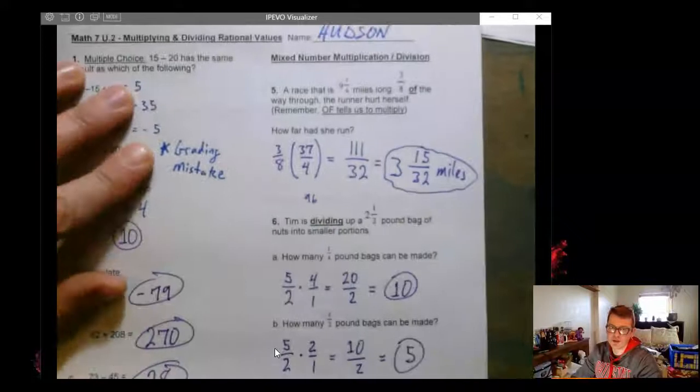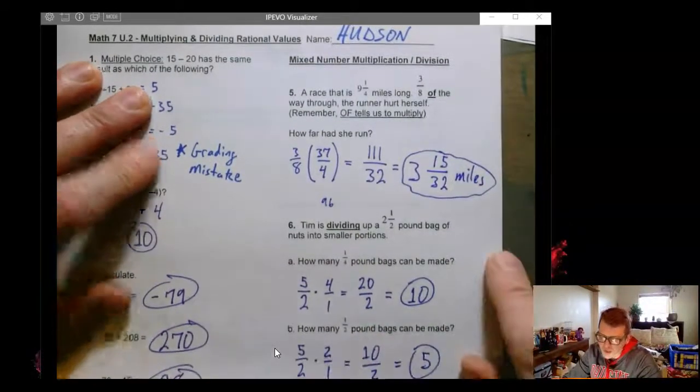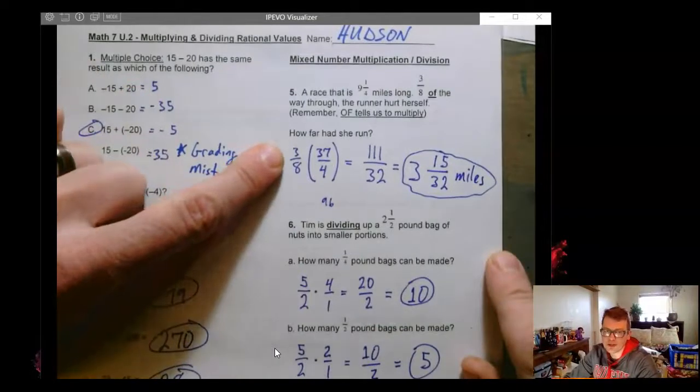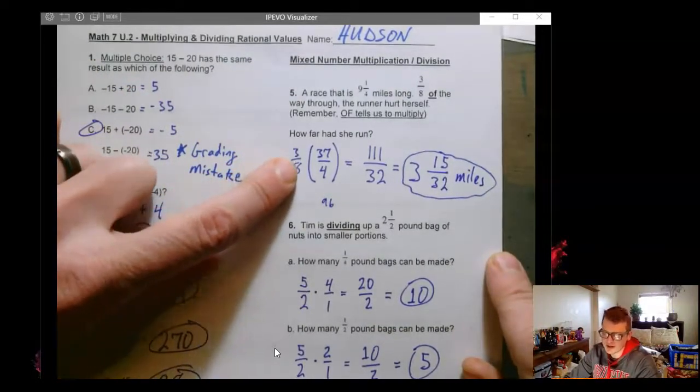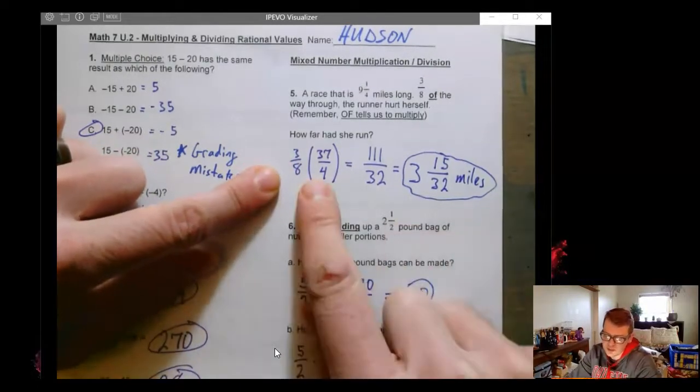Number 5 got a lot of us, so I was pretty forgiving on mistakes for number 5. What we want to calculate is how far is 3 eighths of the entire race.